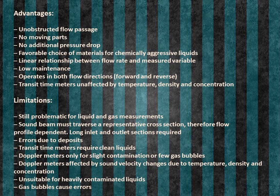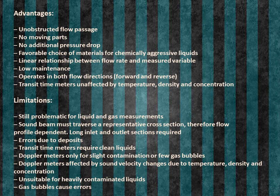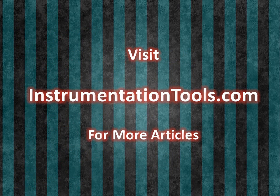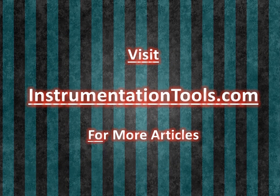Transit time meters require clean liquids. Doppler meters are only suitable for slight contamination or few gas bubbles. Doppler meters are affected by sound velocity changes due to temperature, density, and concentration. Unsuitable for heavily contaminated liquids. Gas bubbles cause errors.